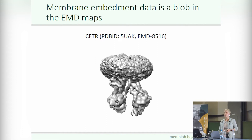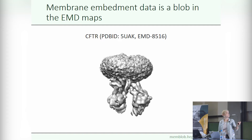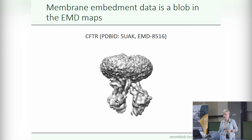Cryo-electron microscopy is an increasingly popular and advanced method for structure determination. It led to an increasing number of solved transmembrane protein structures in the presence of a lipid environment. In the resulting EMD map, we can see the membrane environment as a blob around the protein. We figured that if we could calculate the boundaries of this membrane environment, we could provide high resolution experimental data on the transmembrane regions. Therefore, we built a pipeline to extract this membrane blob and convert it to transmembrane regions. In the next 10 minutes, I will show you how it works.